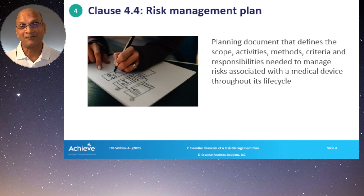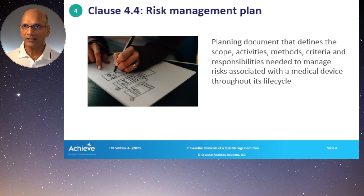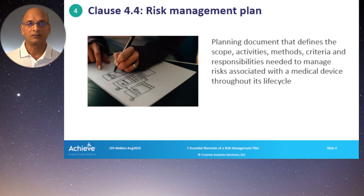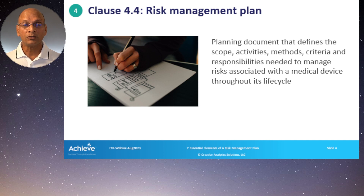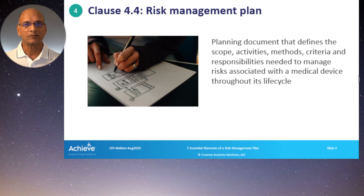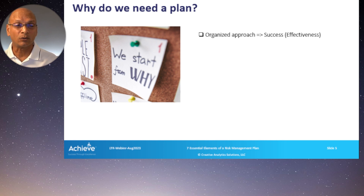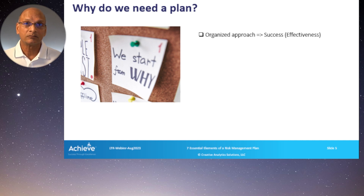So the risk management plan — what is it and why do we care? Everything has to begin with planning. It is a planning document that defines the scope, activities, methods, criteria, and responsibilities needed to manage all the risks associated with a medical device throughout its life cycle. That's a key point — the plan is not one and done. The plan has to be updated throughout the product life cycle, and that's one place where we struggle a lot. I'm going to present an optional eighth element that I include in my templates, which is not required by 14971, but that optional element will actually help you manage the risk management plan.